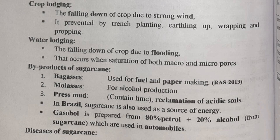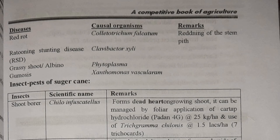Diseases of sugarcane: red rot is the major disease, caused by Colletotrichum falcatum — we will see reddening in stems. Ratoon stunting disease (RSD) is caused by Clavibacter xyli. Grassy shoot disease, also called albino, is caused by phytoplasma. Gummosis is caused by Xanthomonas vasculorum.